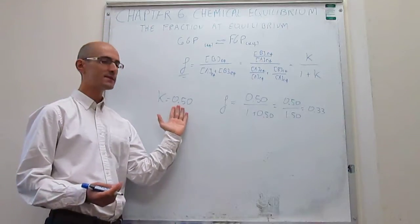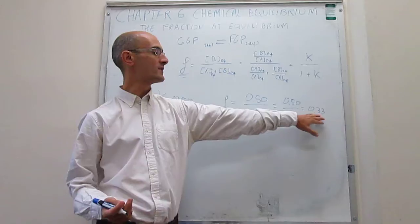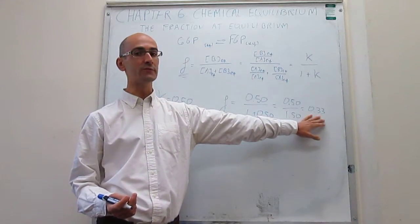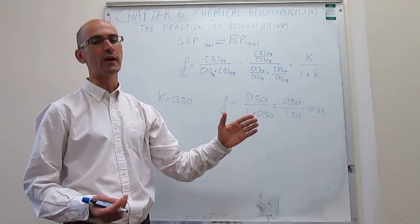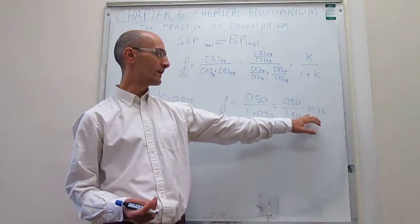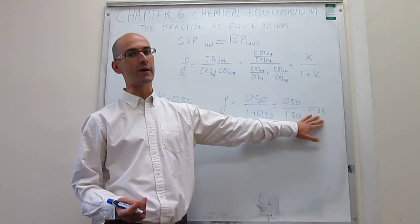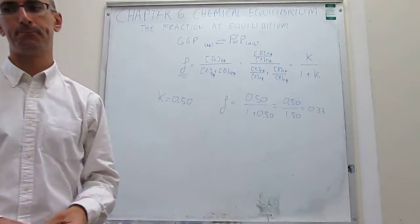An equilibrium constant that is less than 1 is going to give you a fraction at equilibrium that is less than 0.50. That means the reaction is not very displaced towards products. Instead, you reach equilibrium very soon after the reaction has started. Only 33% of all the species in solution will be products. That's the fraction of product at equilibrium.